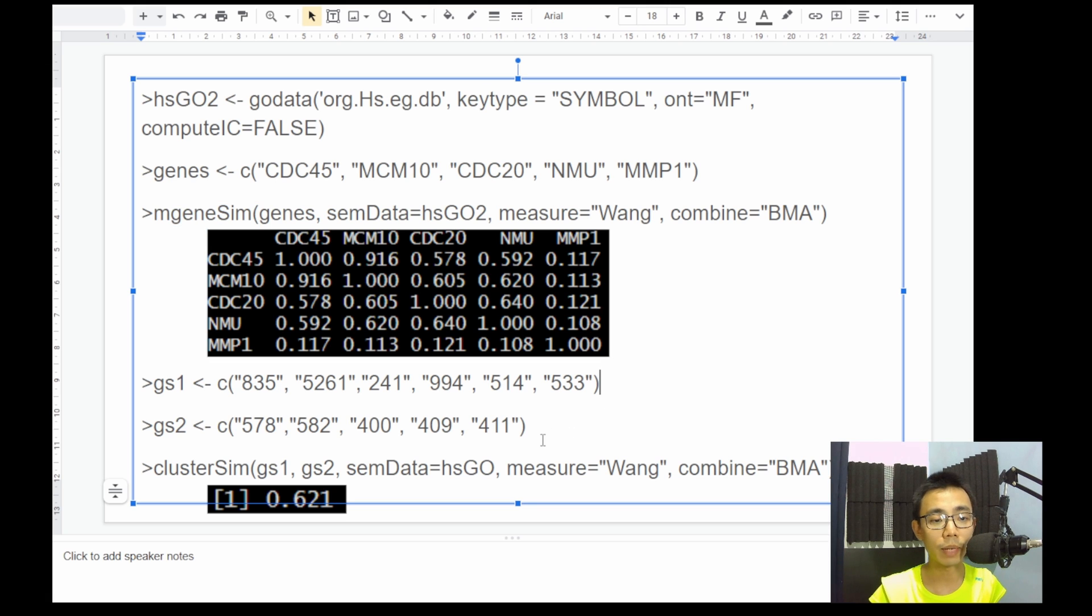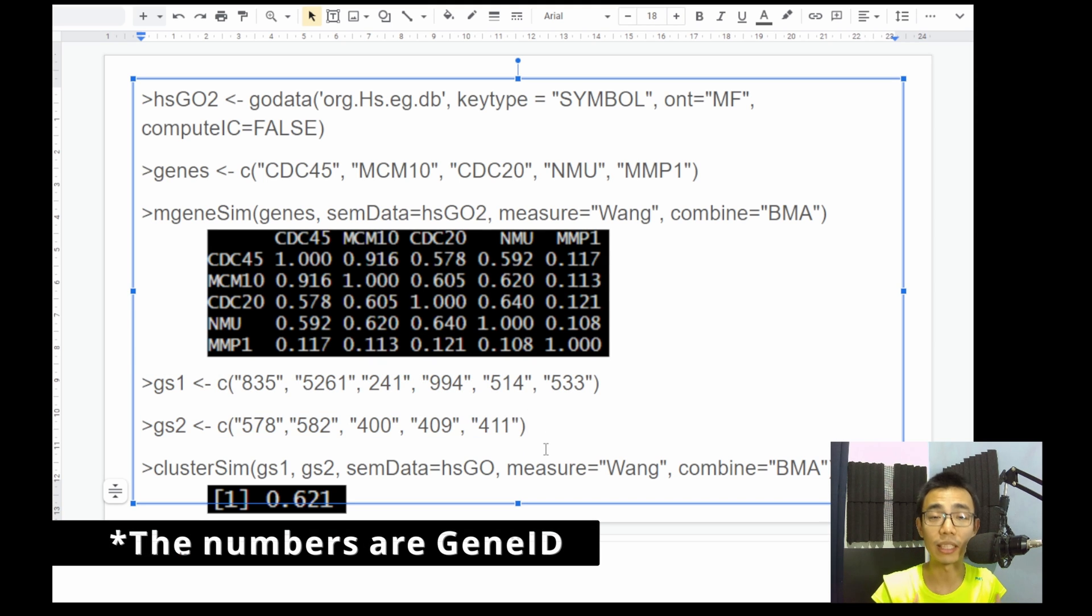Okay, so the last one will actually be just a slightly different naming system, where 835, 5252, 9961 are all actually just different numbers, and they represent different gene IDs, I believe so. And then what you do is that you combine these two gene ID together, and then you combine them,